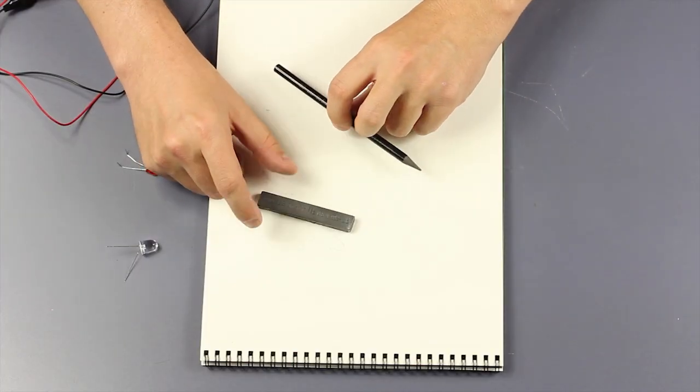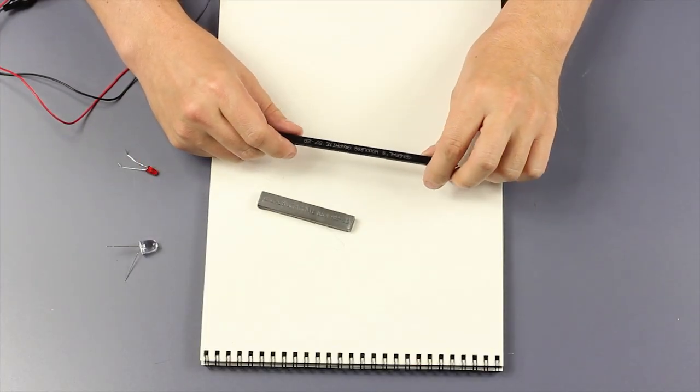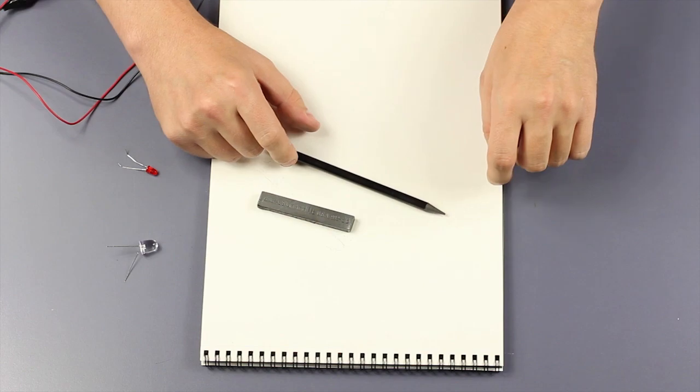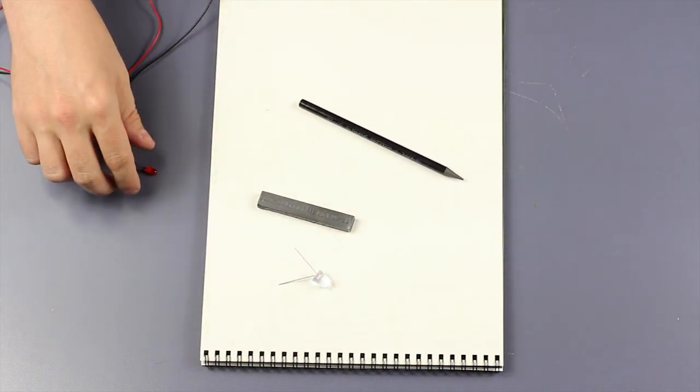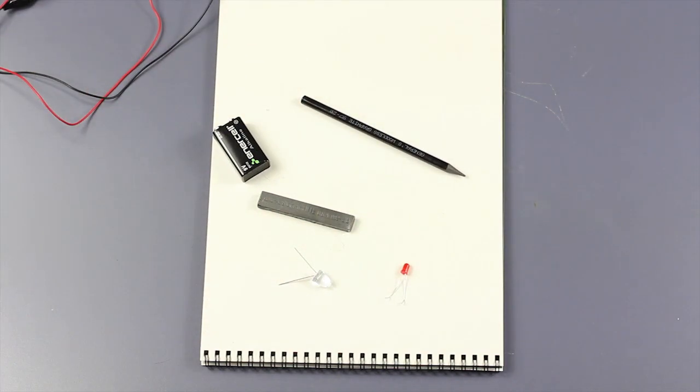By using basic drawing materials, such as a graphite block or a pencil, we're going to be able to draw a circuit out on a piece of paper, hook a battery up to it, and actually power an LED light.